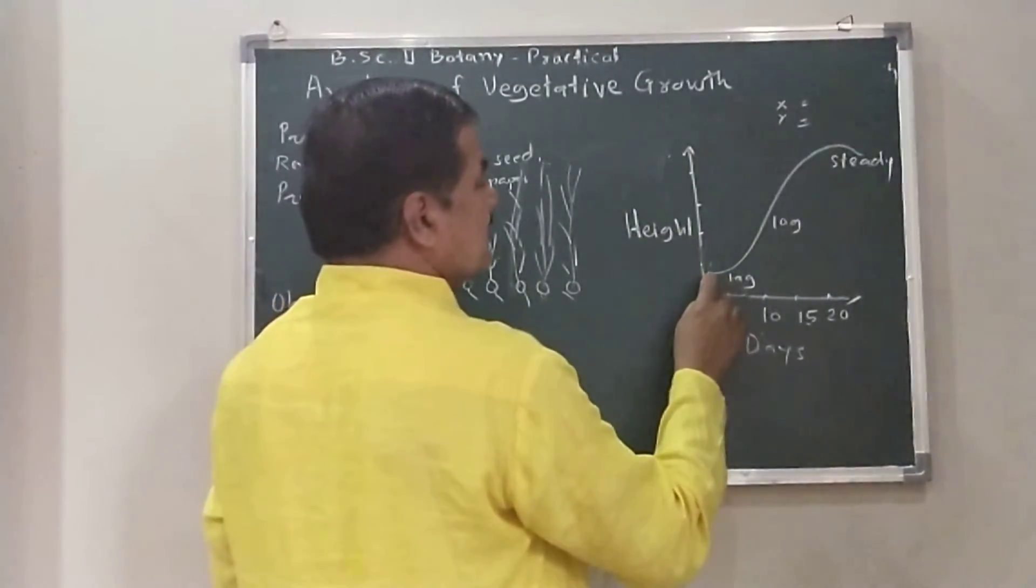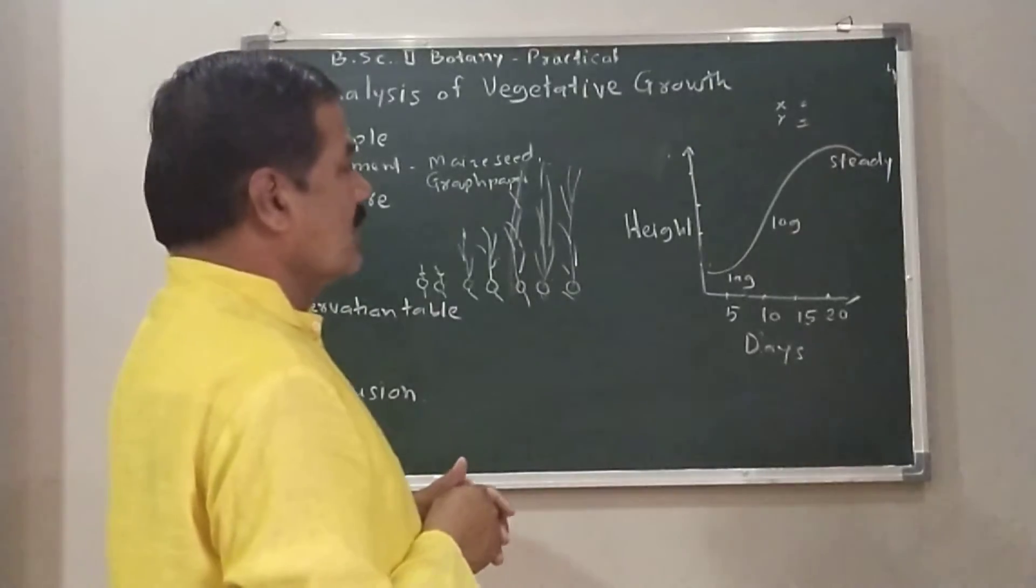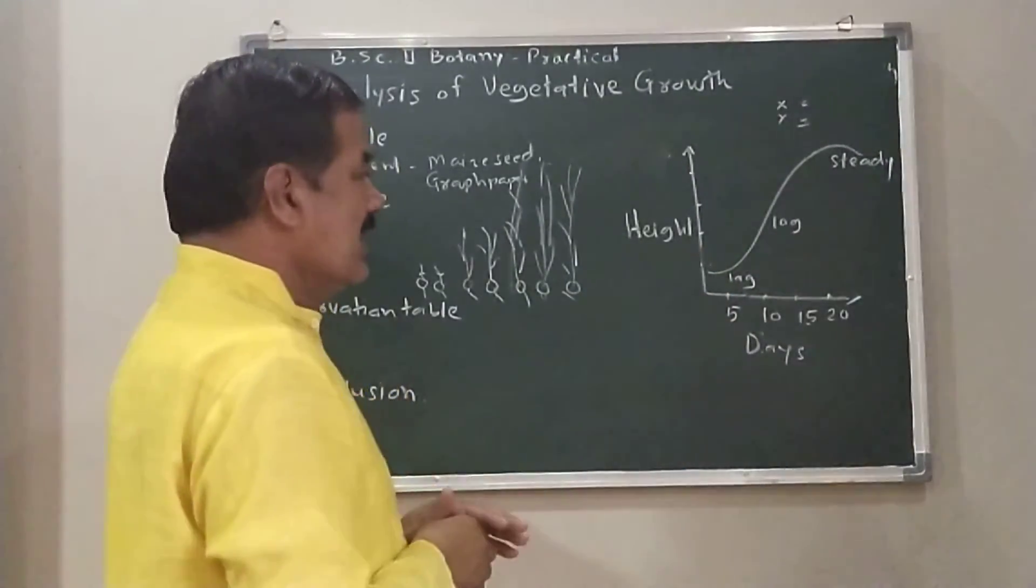Here, in the lag phase, there is cell division. Initially, cell division. Therefore, growth is very slow.